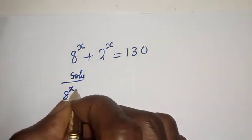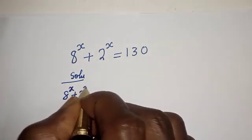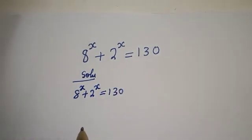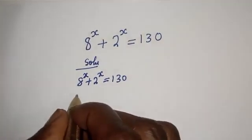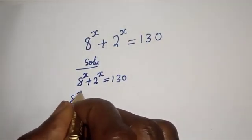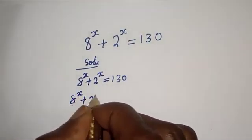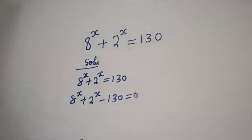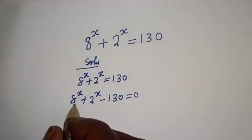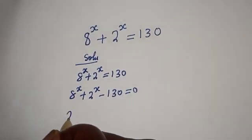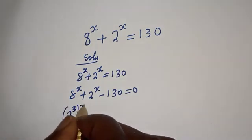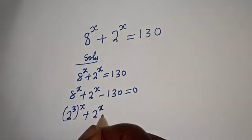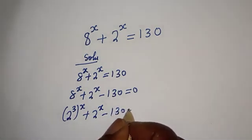We have a raised to power s plus 2 raised to power s is equal to 130. Then a raised to power s plus 2 raised to power s minus 130 is equal to 0. Now, a raised to power s can be written as 2 raised to power td to the power of s, plus 2 raised to power s minus 130 is equal to 0.